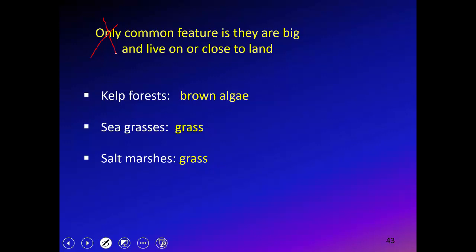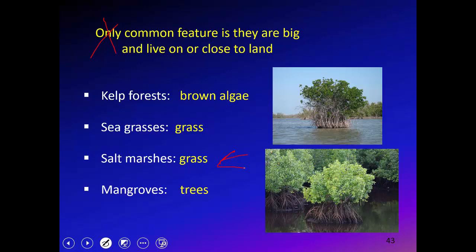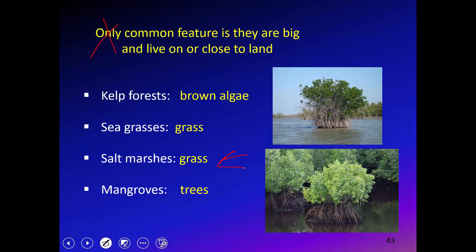A theme common to all these big plant habitats is that it's the detritus from the plants — once they die and decompose — that supports the food web, not the plant itself directly. That's the case for salt marshes as well: once the grass dies, its detritus supports many organisms in the system. Now let's add one more organism to the mix: mangroves — which are not grasses but trees.